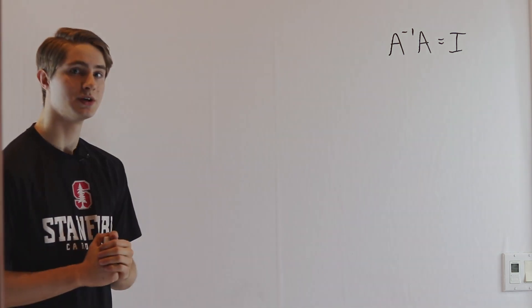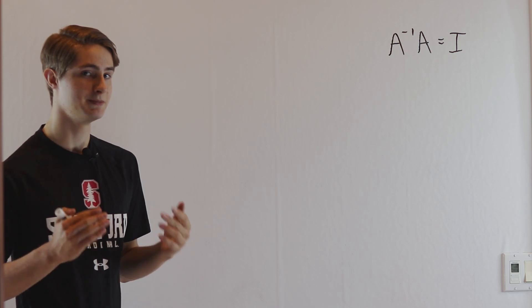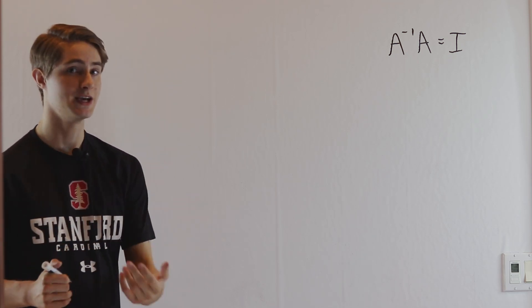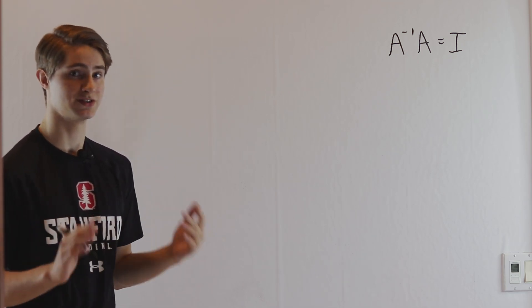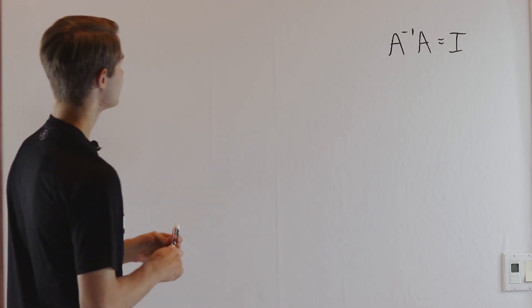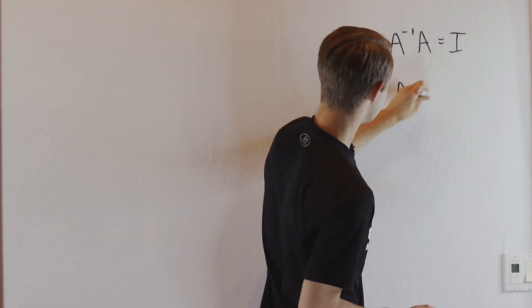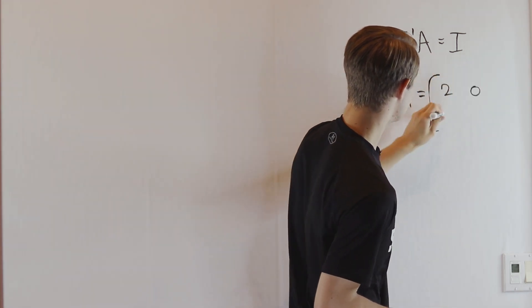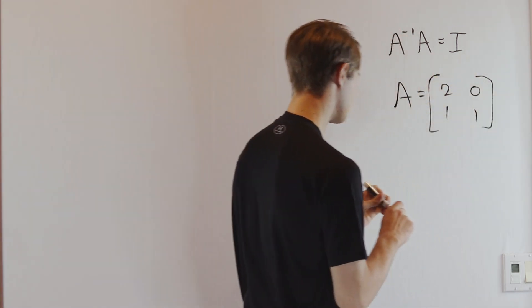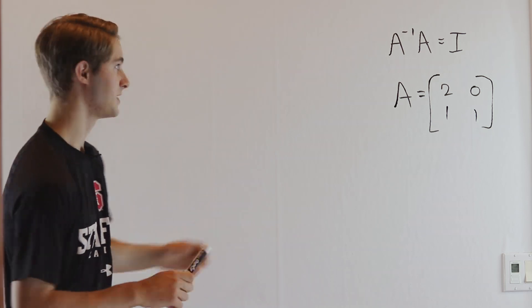I'm going to do a lot of things that don't make sense at first, but by the end of this video it'll make perfect sense. We're going to pick a matrix A and define it as [2, 0; 1, 1]. This method will apply to any square matrix.